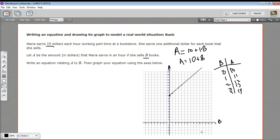And we could read that line to see if she sold 10 books, how much money would she be earning, and so forth. So that is how to write an equation to relate one thing to another and then to graph it.